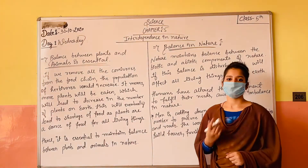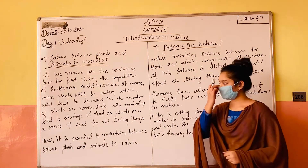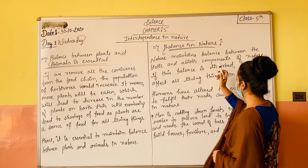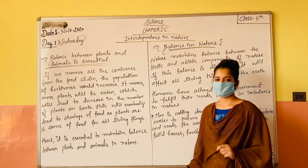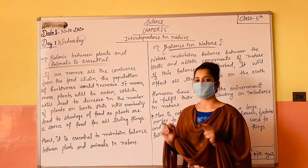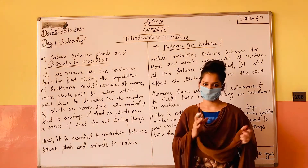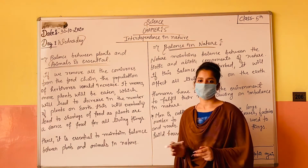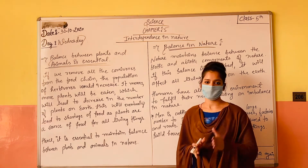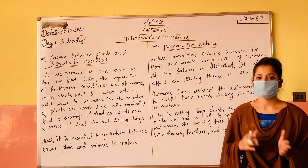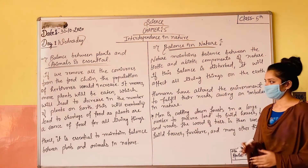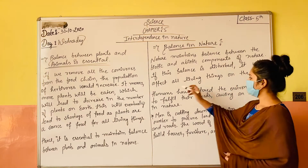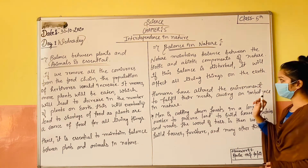Ab balance in nature. Ab prakriti pe hum balance kaise dekh sakte hain? Nature maintains balance between the biotic and abiotic components of nature. Jo prakriti hai, yeh biotic aur abiotic components ka balance banaa ke rakhti hai — dono ko barabar hisse mein rakhti hai, taaki dono ka kaam chalte rahe ek doosre ke oopar, kyunki abiotic aur biotic dono ek doosre par dependent hain.